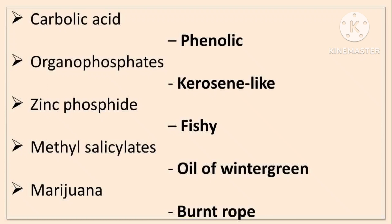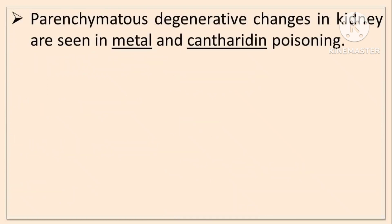So, burnt rope-like smell in cannabis or marijuana. Parenchymatous degenerative changes in kidney are seen in metal and cantharidin poisoning — so, parenchymatous degenerative changes in metal and cantharidin.